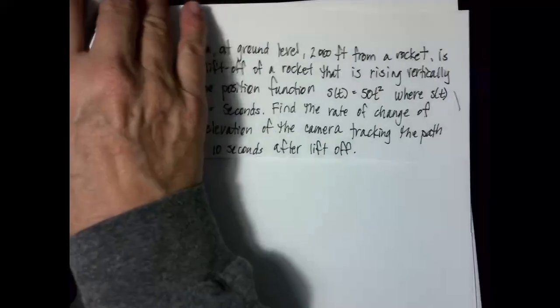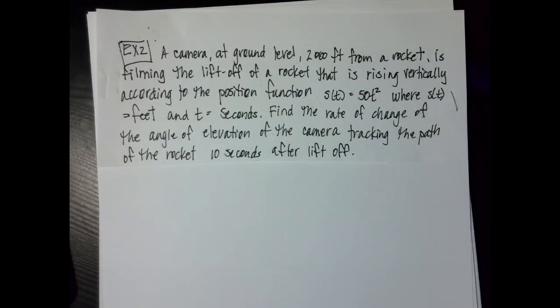All right, so now as we look at our second problem, it says that a camera at ground level 2,000 feet from a rocket is filming the lift off of a rocket that is rising vertically according to the position function s(t) equals 50 t squared, where s(t) is feet and t is in seconds. Find the rate of change of the angle of elevation of the camera tracking the path of the rocket 10 seconds after liftoff.